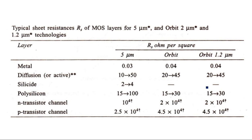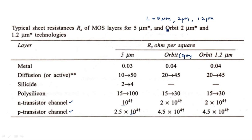For N-channel transistors, this is the value for 5 micrometer technology, and for P-channel transistors, this is the value for 5 micrometer technology. Different technologies are available: 5 micrometer, 2 micrometer, 1.2 micrometer — these all refer to the length of the channel. Since we consider a square, RS is calculated in ohms per square, meaning L is equal to W. That is why in this particular table, L is equal to W.